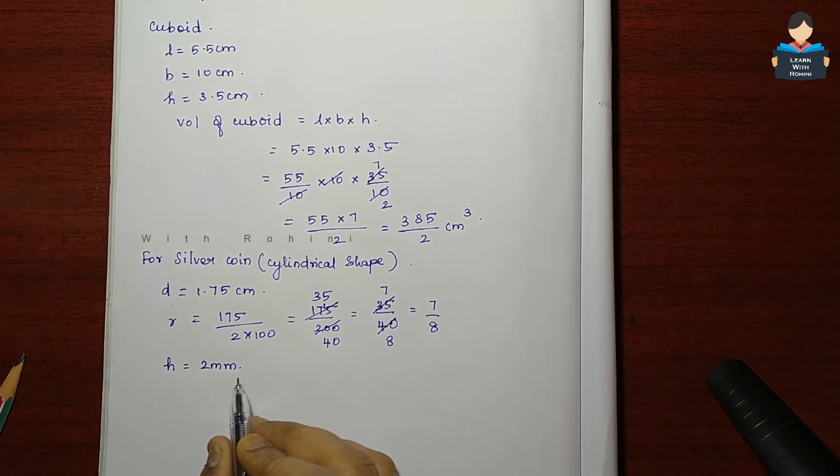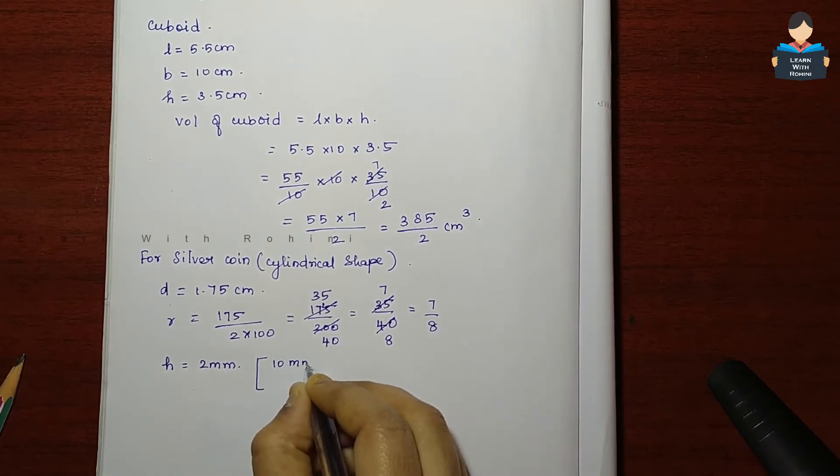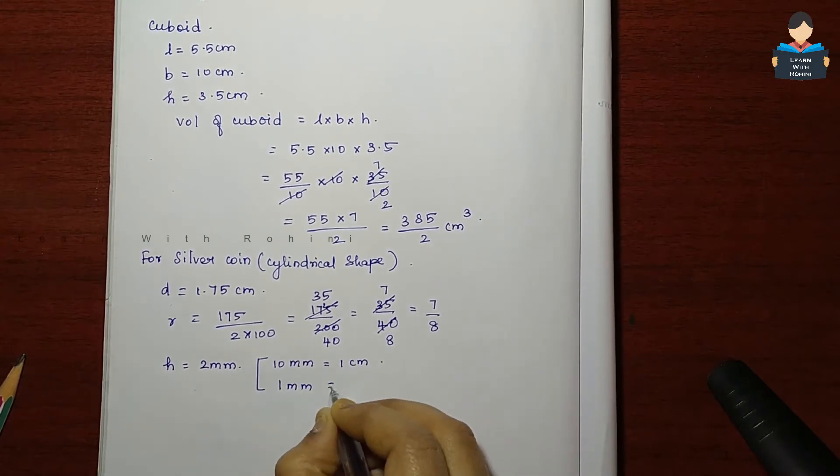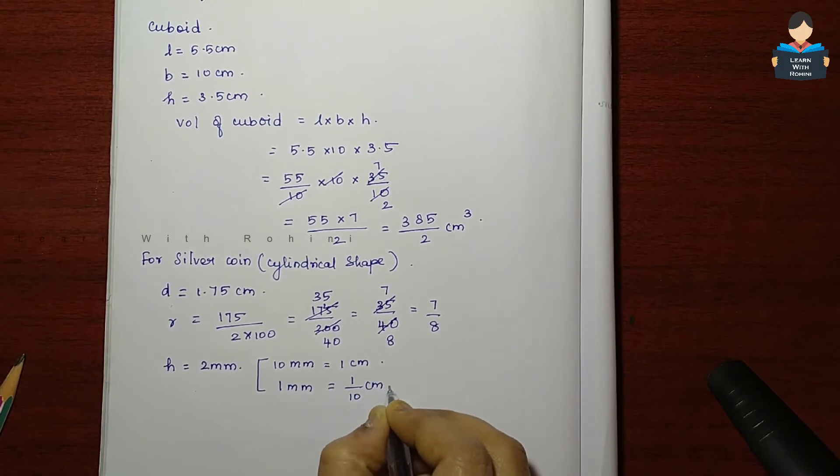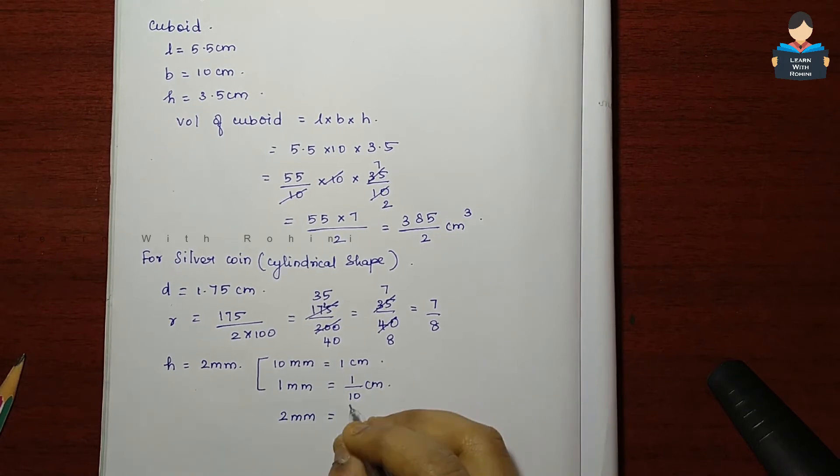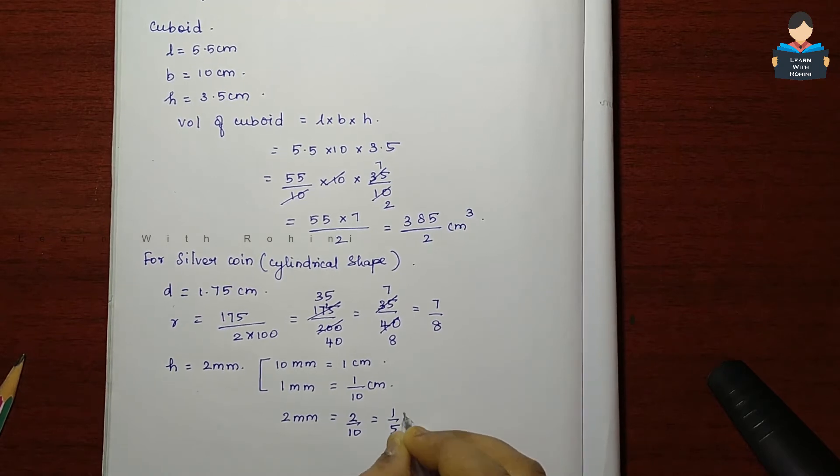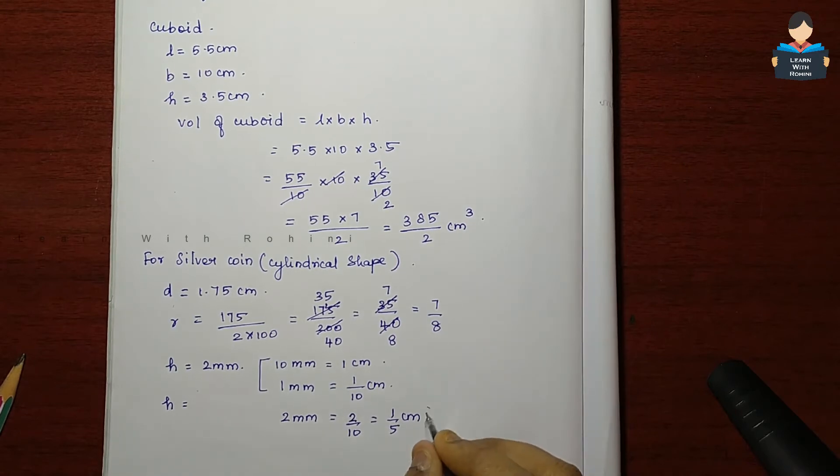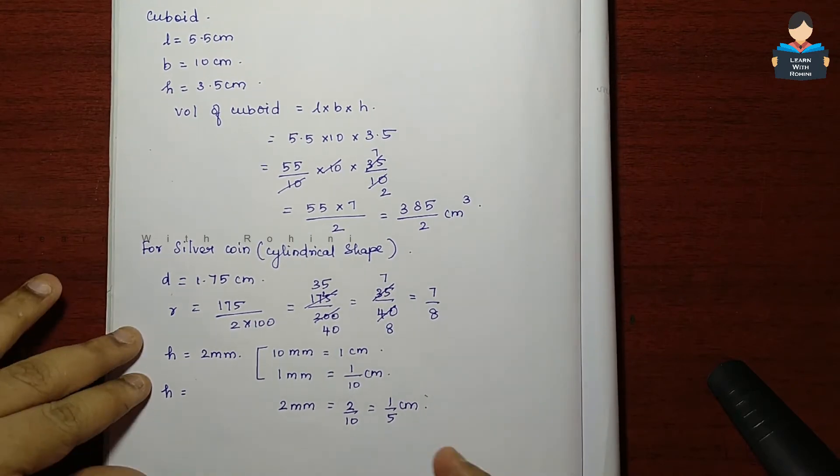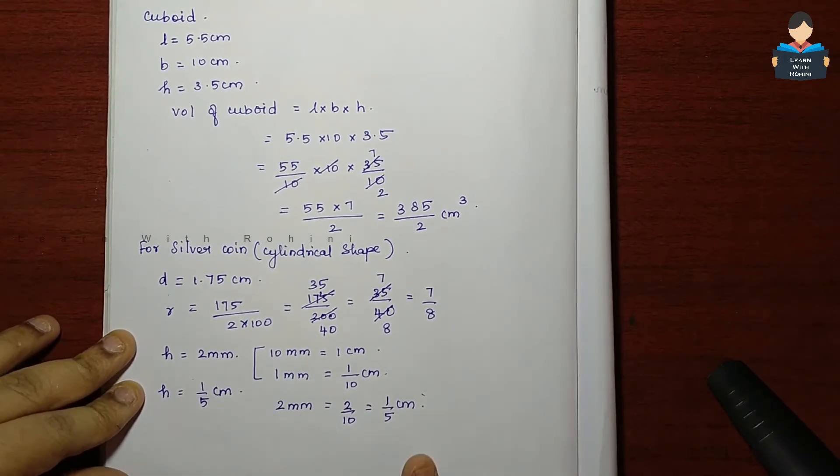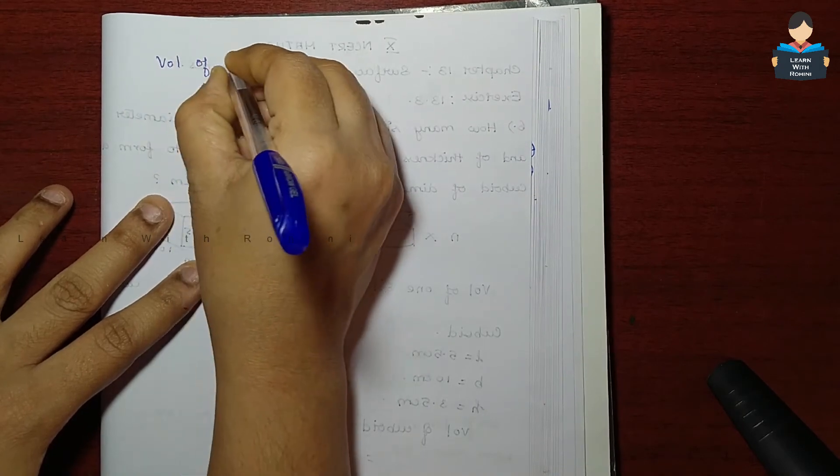Convert: 10 mm equal to 1 cm, 1 mm equal to 1 by 10 cm, then 2 mm equal to 2 by 10 which is equal to 1 by 5 cm. So height equals 1 by 5 cm.